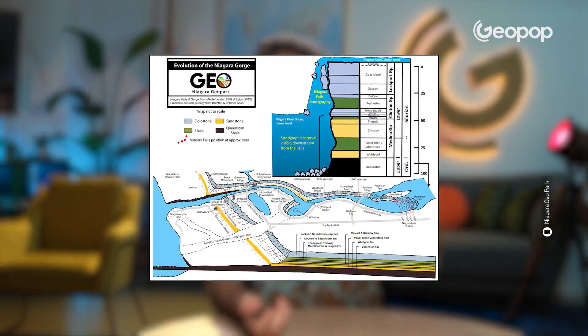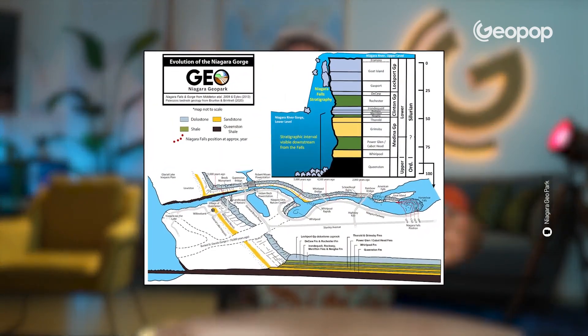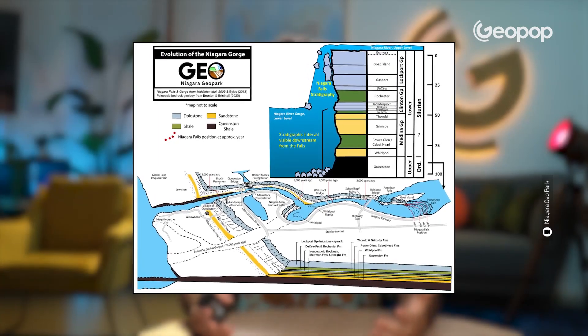This escarpment also has very high geological significance. If we could remove all the water and see the rock behind it, we would be able to see a succession of layers that formed over more than 400 million years. In fact, some people actually saw Niagara Falls without water less than 60 years ago.